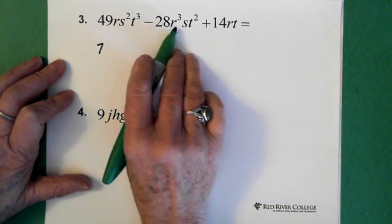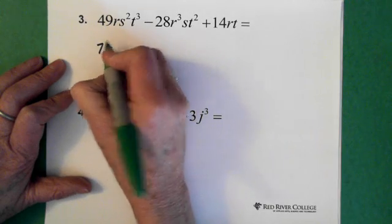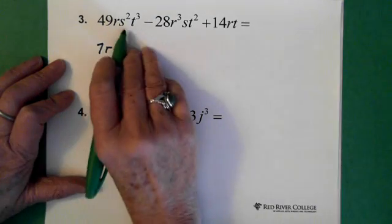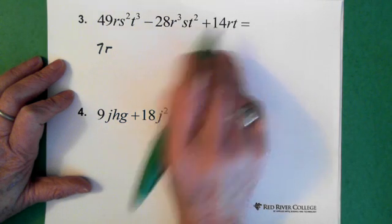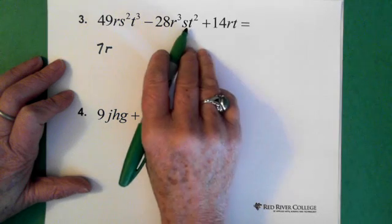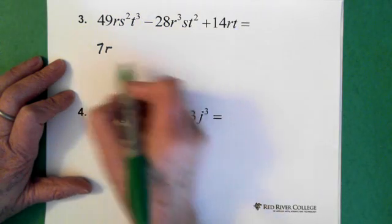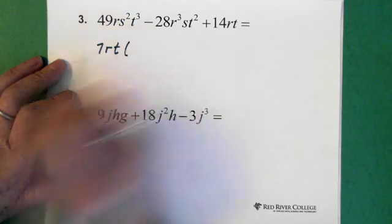Now we can see there's an R here, another R cubed and another R, so there's an R that's common. Here we have an S squared and an S, but there's no S here. So S is not common. We have a T cubed, T squared, and a T. So then it's just a T. So that's what we pull out.